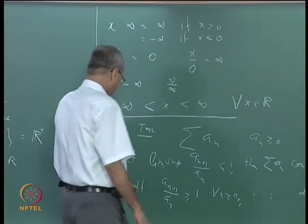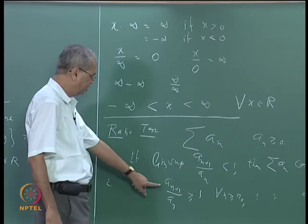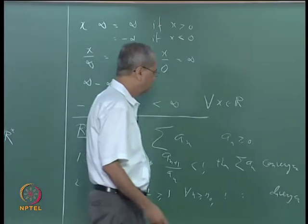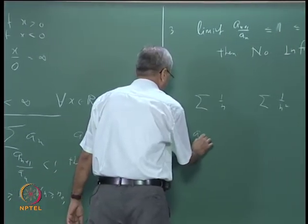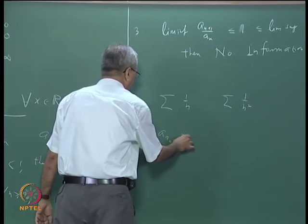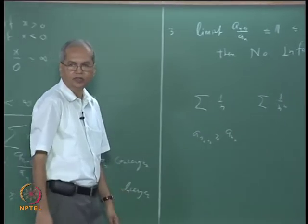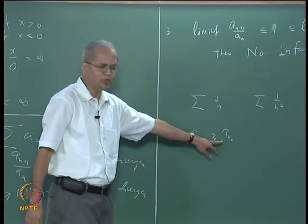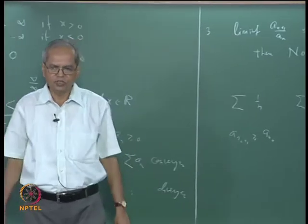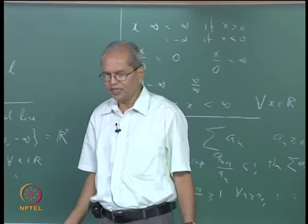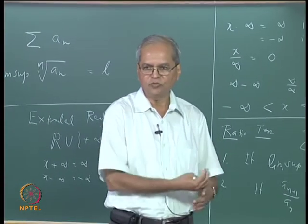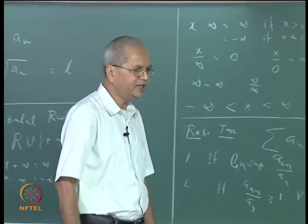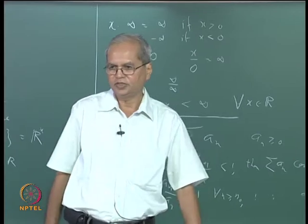For the divergence condition: if aₙ₊₁ ≥ aₙ for all n ≥ n₀, then in particular all aₙ ≥ aₙ₀ for n ≥ n₀. So aₙ cannot tend to 0 since all terms are bounded below by aₙ₀ > 0. Hence the series cannot converge.